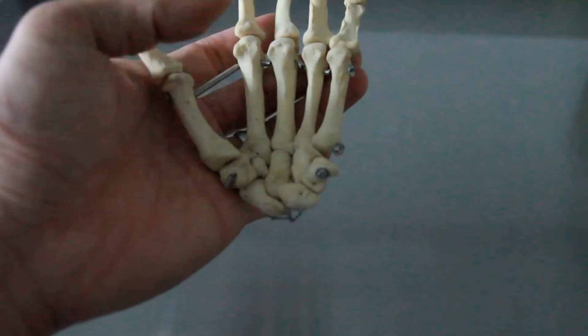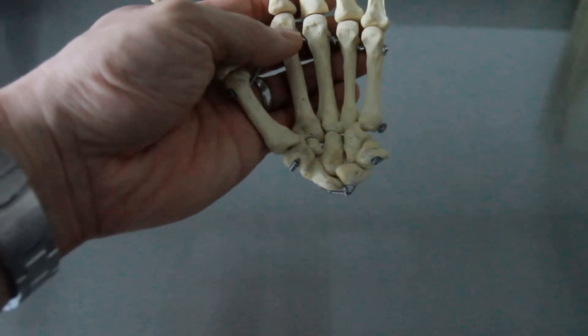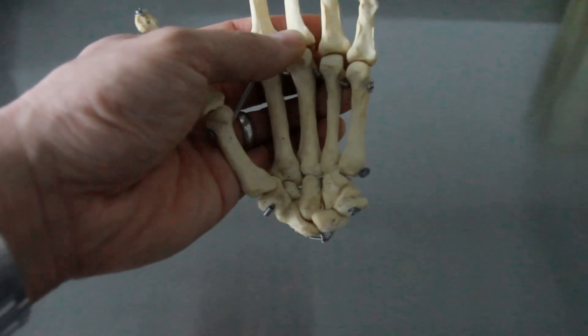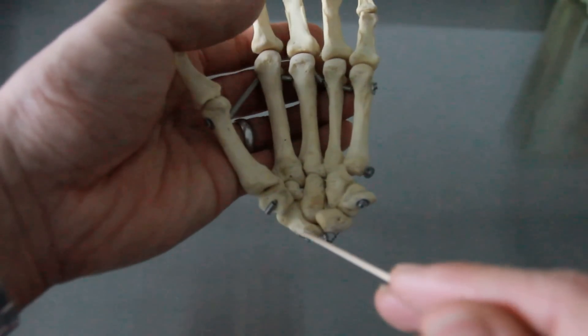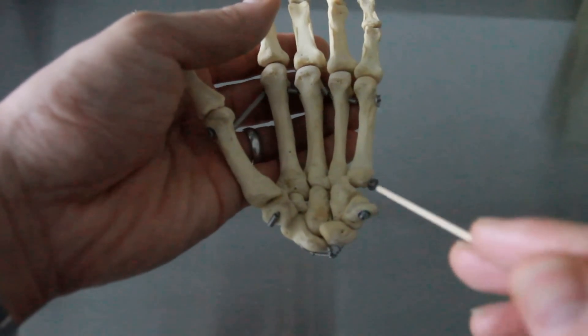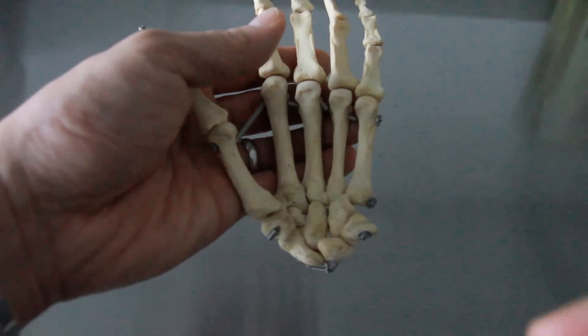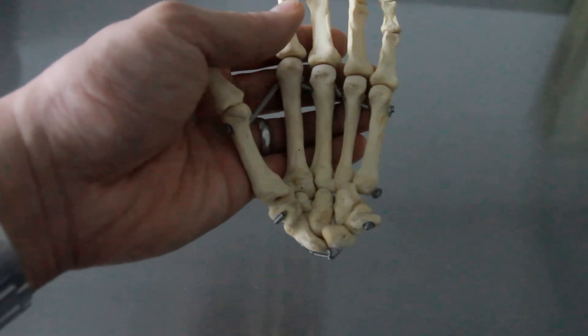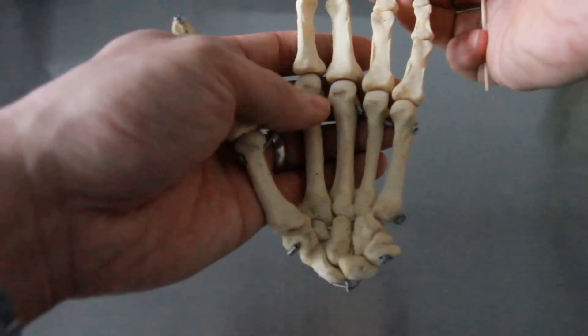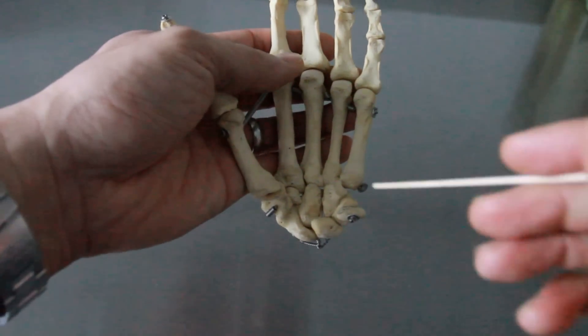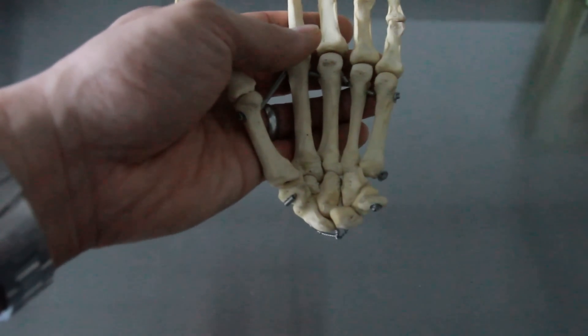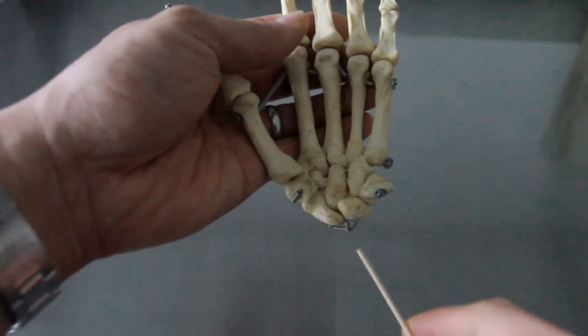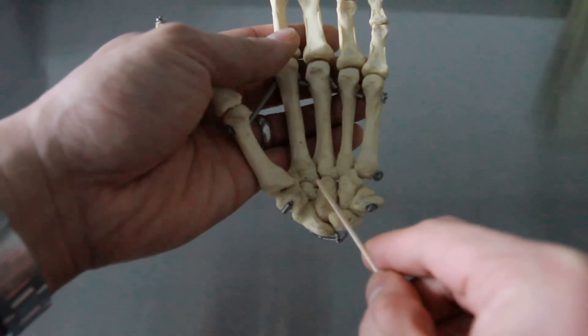So some people use acronyms to help you with this. The only one that I remember is some lovers try positions that they can't handle. Gives you the first letter of all these bones. Admittedly, it's a little dirty, but you know what? It gets the job done. Problem with this, that often people will remember this. Oh, there's the lover bone. There's no lover bone. They qualify that. It's the lunate. Okay. So memorize scaphoid, lunate, triquetrum, pisiform, trapezium, trapezoid, capitate, hamate.